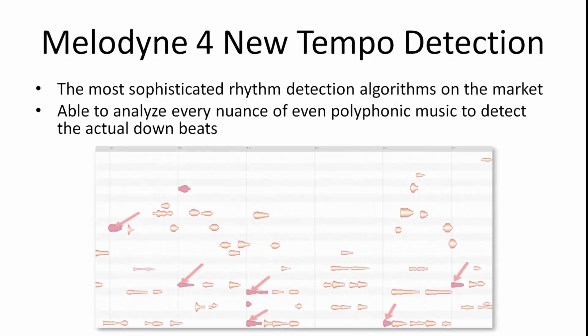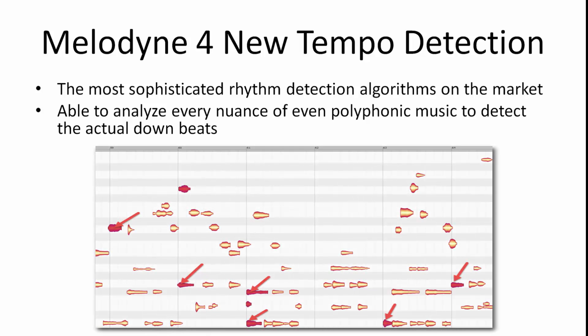Melodyne 4's tempo detection process is really world class at this point. DAW designers have had to use only transients to try to detect where the tempos are at. What Melodyne is bringing now is actually looking at the content of the musical material to detect things such as where the downbeat is.